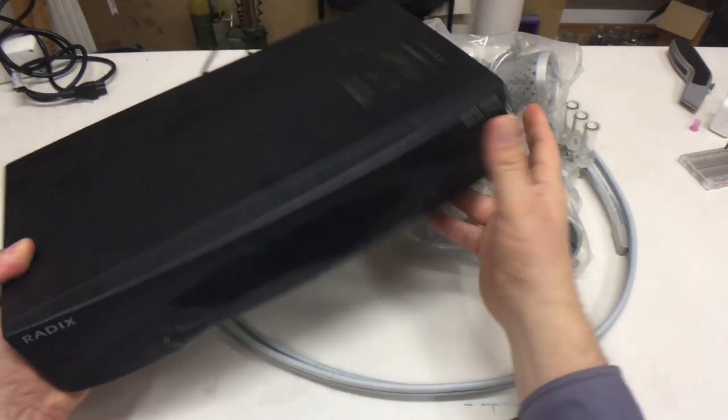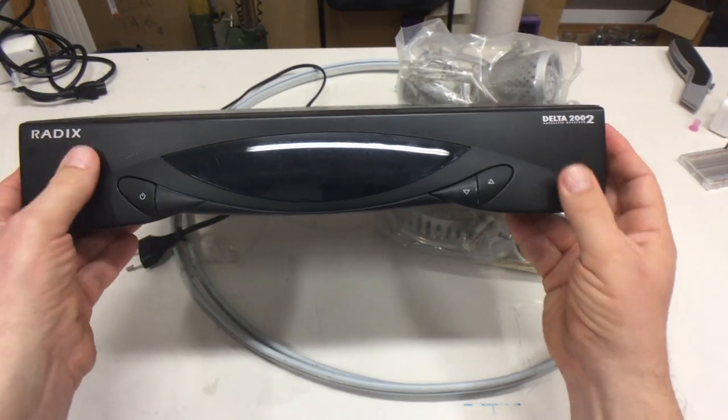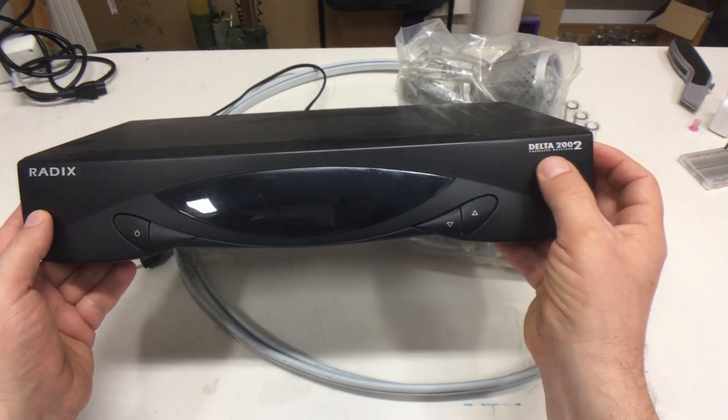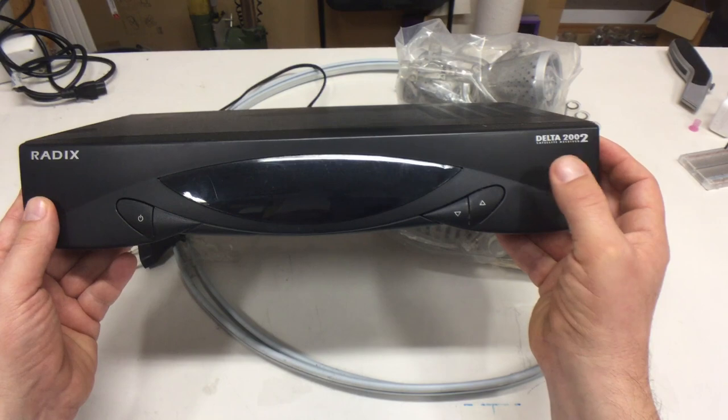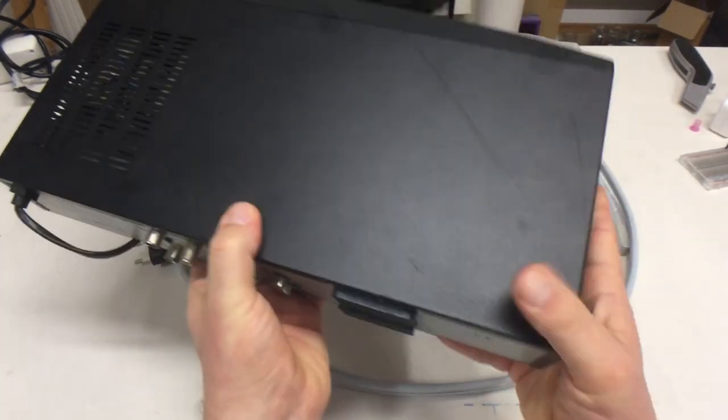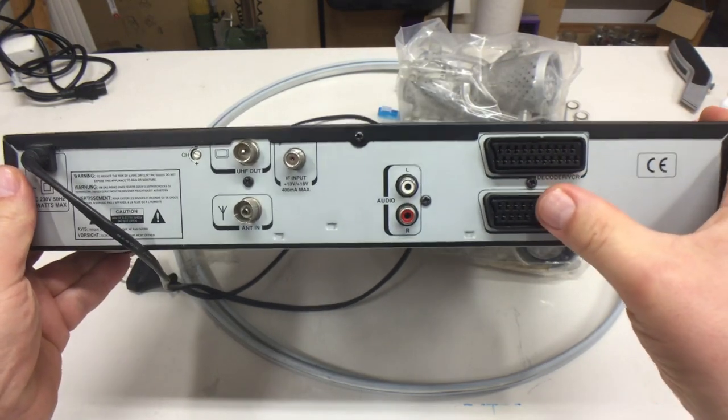First, we have a blast from the past. It's a Radix Delta 2002 satellite receiver, analog. And it spots, would you believe it, SCART connectors.